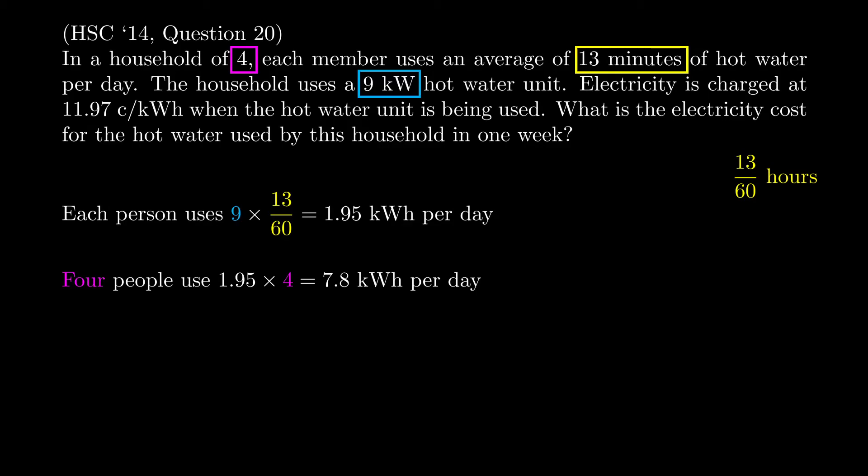Now we're being asked how much is being used in one week, so per week we better multiply that number by seven and we get 54.6 kilowatt-hours per week.